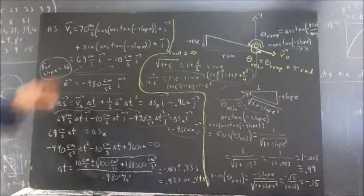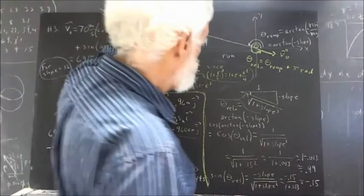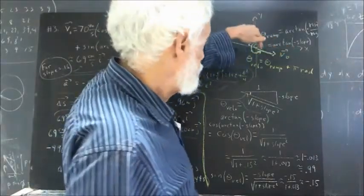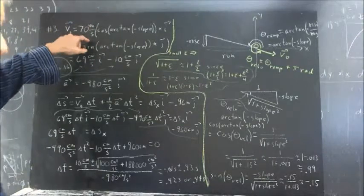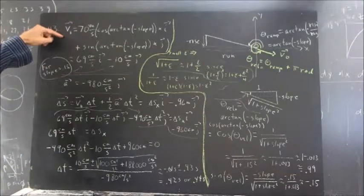Okay, now we're given that the ball rolls off of a ramp of slope 0.15 with a velocity V0 of magnitude 70 centimeters per second. But we want to find the vector velocity.